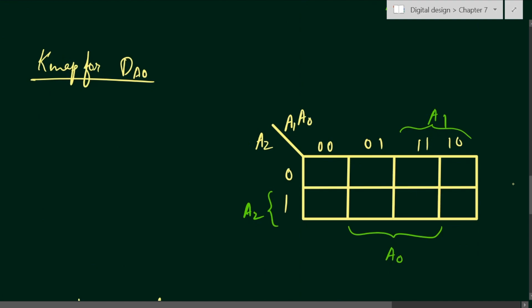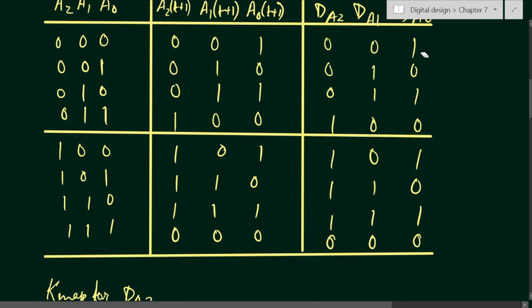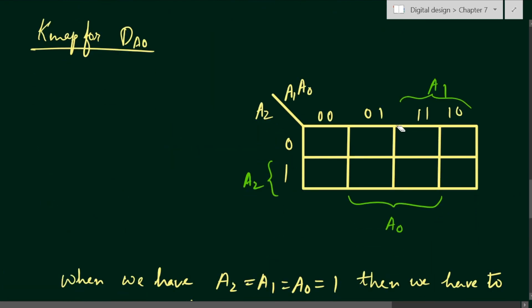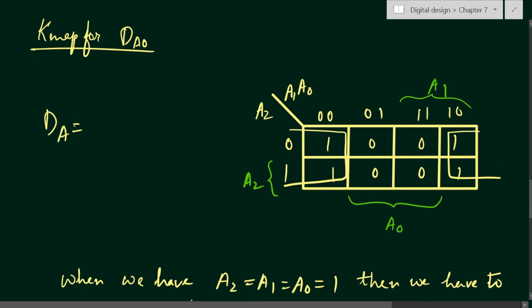Now we find the expression for DA0. The DA0 values are: 1, 0, 1, 0, 1, 0, 1, 0. There is only one product term: DA0 = Ā0.